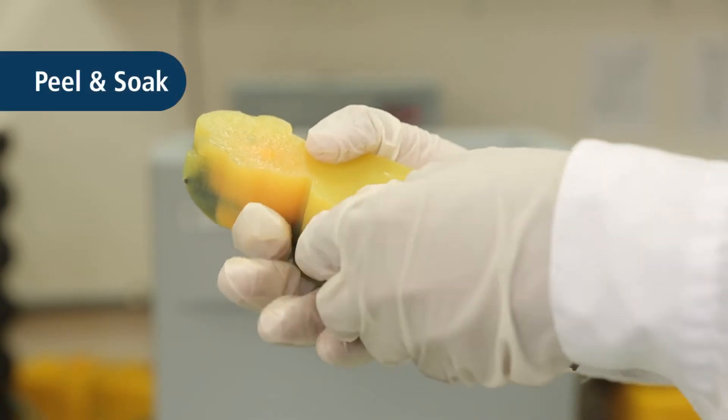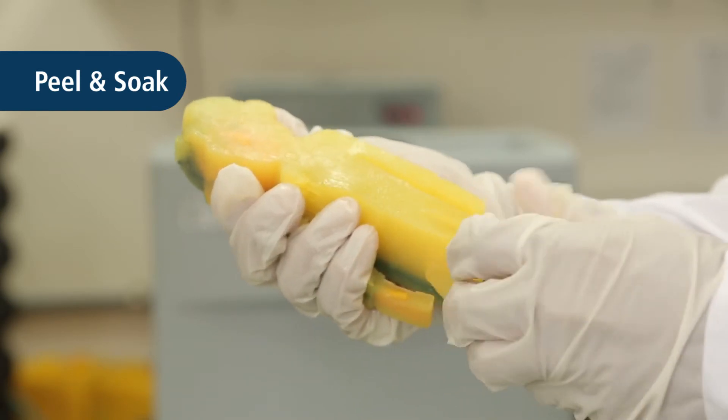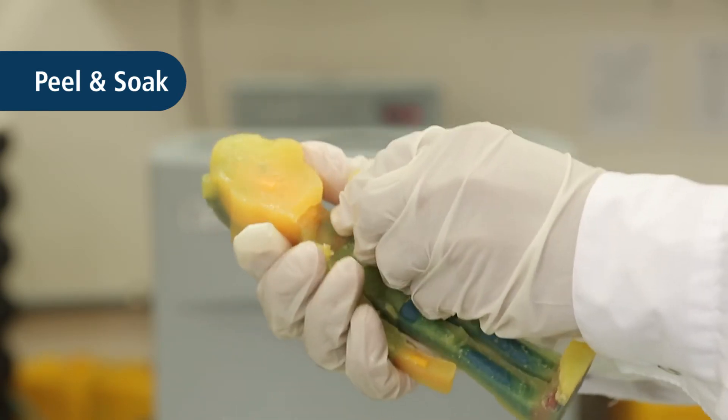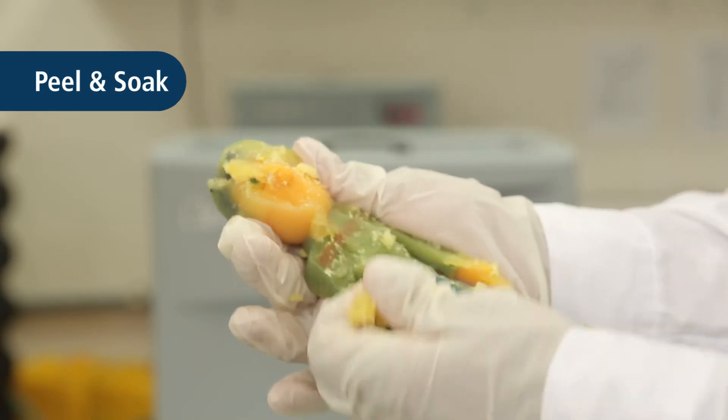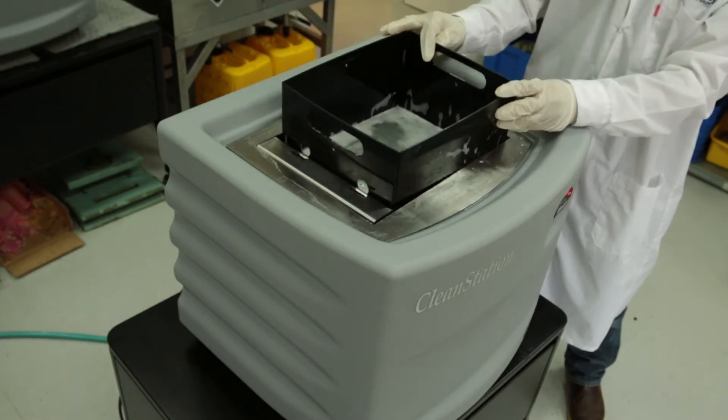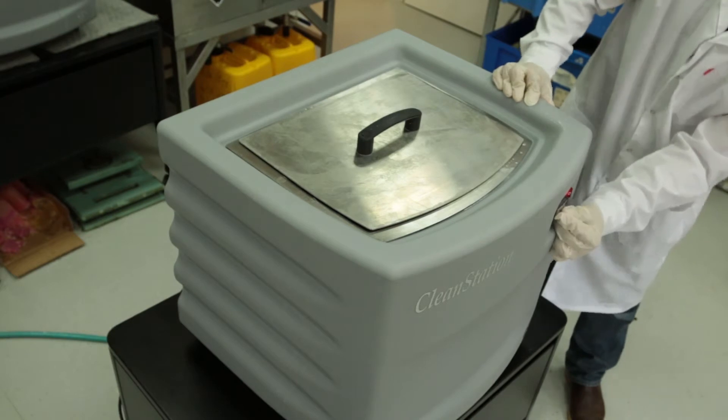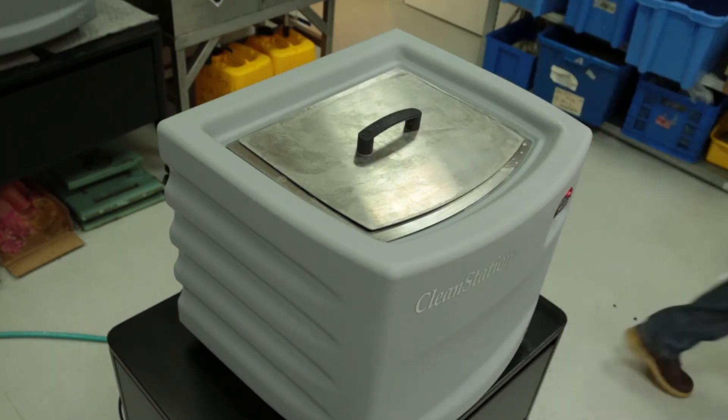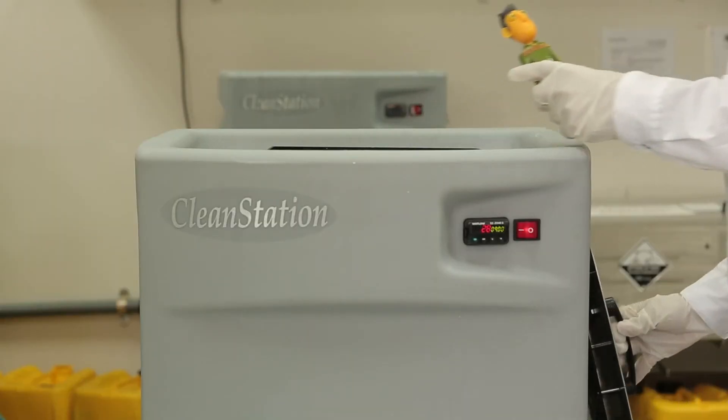The peel and soak method is especially effective for parts with thick layers of support material. First remove the support material manually. Then place the partially cleaned part in the cleaning solution to remove the remainder of the material. Once the support material has been dissolved, rinse the part in tap water.